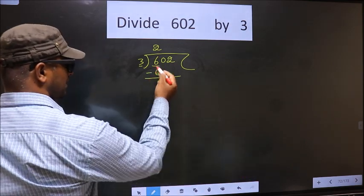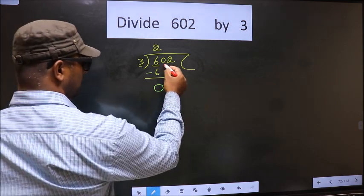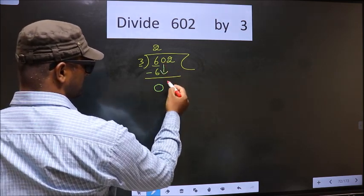Now you subtract. 6 minus 6 equals 0. Now you bring down the next number. That is 0 down.